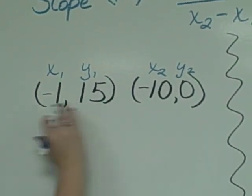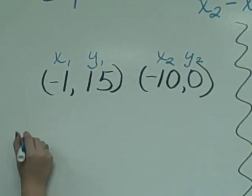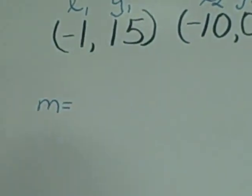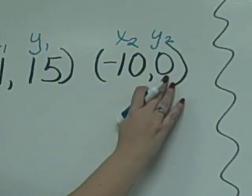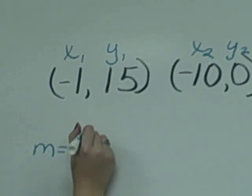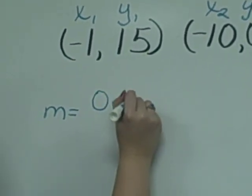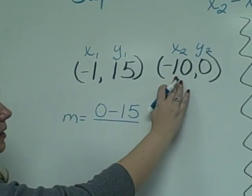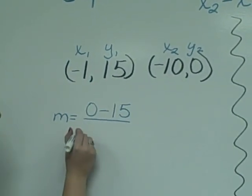To find the slope, we're just going to plug these four numbers into our formula, starting with y2 minus y1. So we would have 0 minus 15. In the denominator, we would have negative 10 minus negative 1.